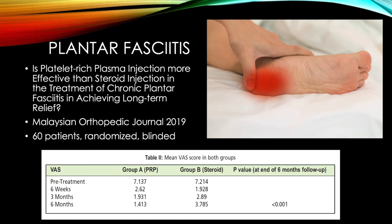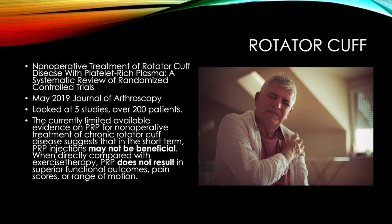For plantar fasciitis, a study out of the Malaysian Orthopedic Journal just last year showed that PRP injections were extremely helpful. Looking at the visual analog scale, before treatment pain was around seven; at six weeks, steroids were actually doing better, but at three months and six months the PRP group gets better and better, keeps improving — and this was statistically significant.